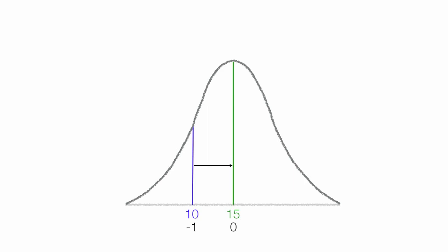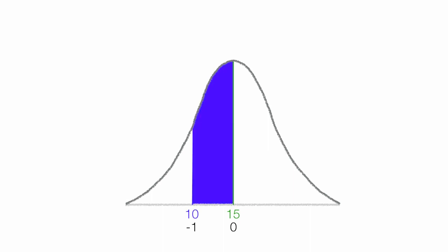I will determine the area between 10 and 15, and I'll add that to the area above 15. So this blue area is equal to 0.3400. I determined that by looking up negative 1 in a standard normalized table.